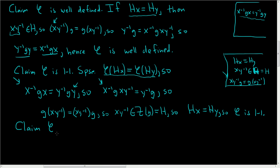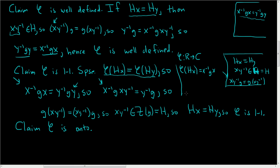Claim: phi is onto. To show it's onto, let's recall that phi took a coset Hx and sent it to x⁻¹gx, mapping the set of right cosets into the conjugacy class of g.